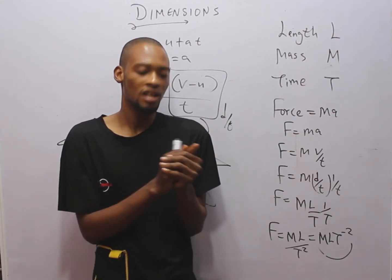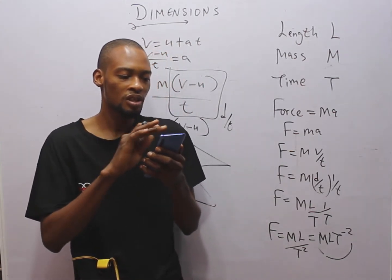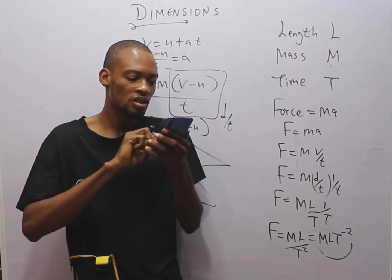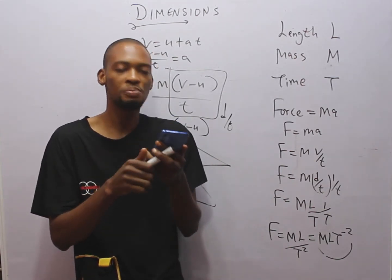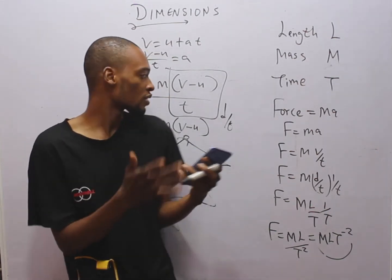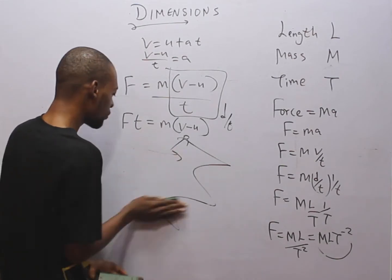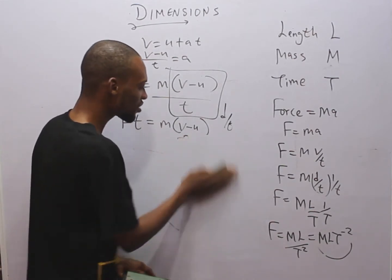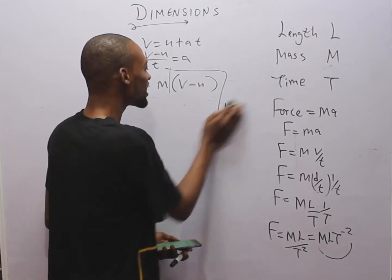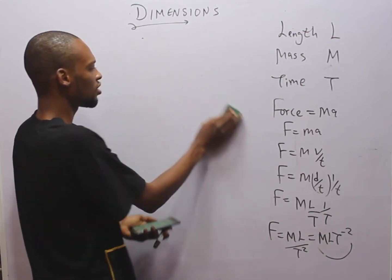For these questions I shall be making use of the Flash Learners JAMB CBT application. It contains thousands of questions and you can choose any topic you wish to study. Get it on Google Play Store or visit flashlearners.com. Activation requires a token.